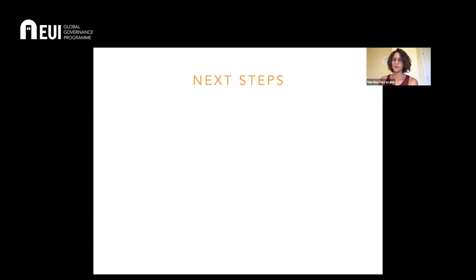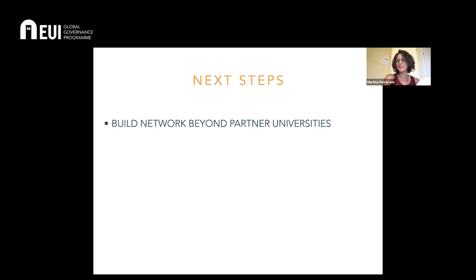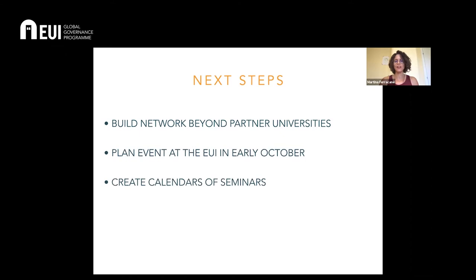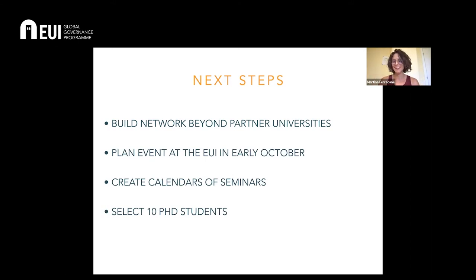The next steps for this summer: our to-do list is to start creating our network. We've already received a lot of interest and more people have joined. The idea is to have in early October a first event, hopefully in person, and we would be glad to host you at the EUI. We also have to start creating a calendar for our seminars for the next academic year and start the selection of the 10 PhD students. Thanks for joining this project — looking forward to starting collaborating.